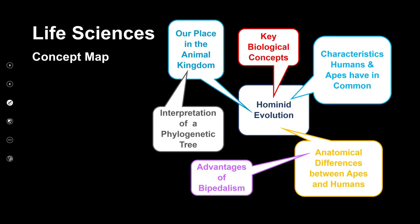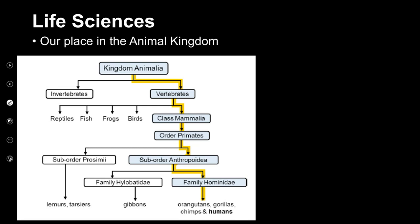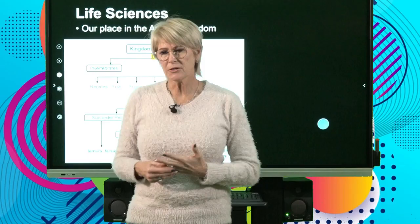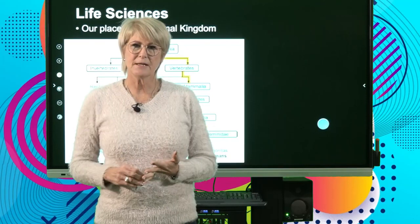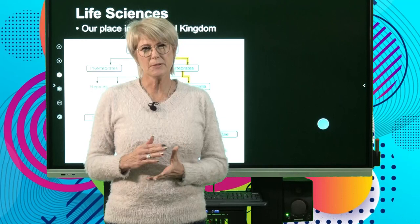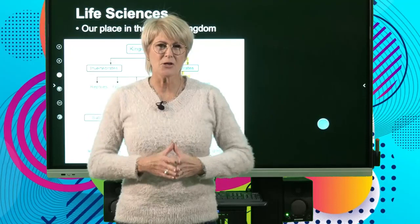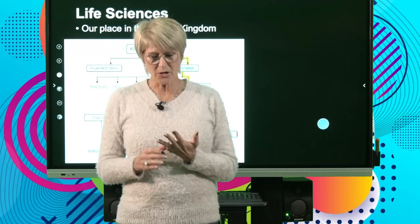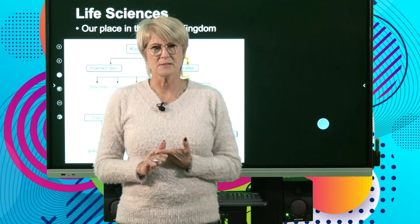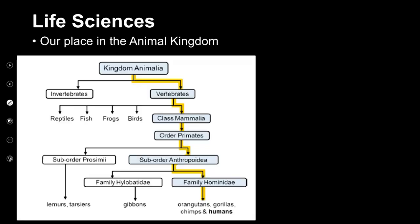We've had a look at biological concepts and how to interpret a phylogenetic tree. Now we're going to have a look at our place in the animal kingdom and where we fit in, as well as characteristics that humans and apes have in common. For grade 12 and human evolution, you must know which family humans belong to, and you must know the genus and the species — not just for humans, but for human ancestors as well.